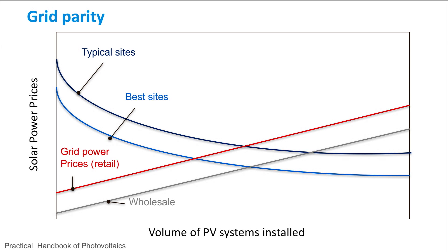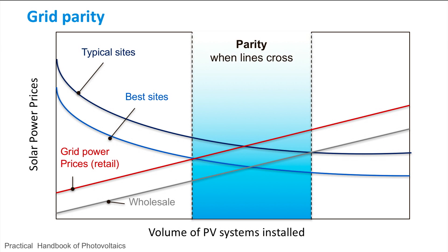This is different from the gray line that represents the wholesale energy costs — the cost that the producer pays. Parity can be reached in best and worst cases when our lines intersect. Intersections with the red line would be considered socket parity, while intersections with the gray line would be considered grid parity.